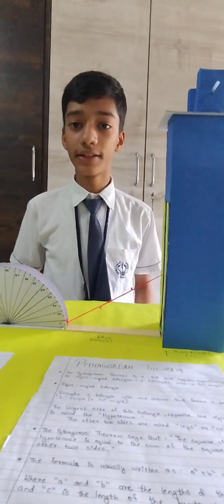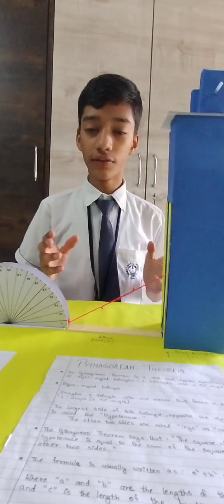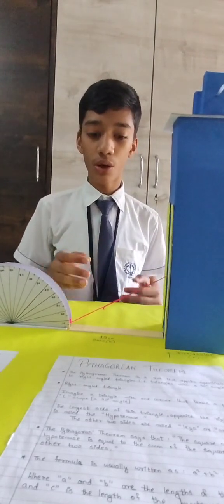The Pythagorean theorem states that the square of the hypotenuse is equal to the sum of the squares of the other two sides. The formula is usually written as c² = a² + b², where c is the hypotenuse and a and b are the other two sides.